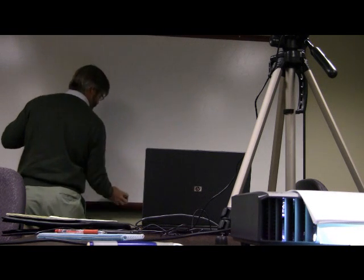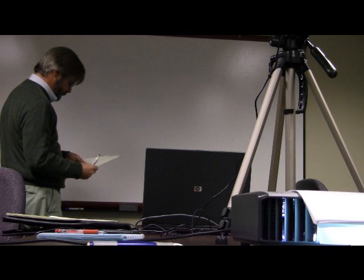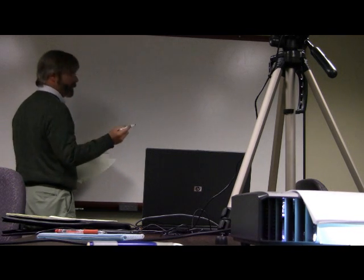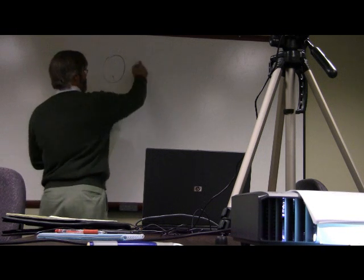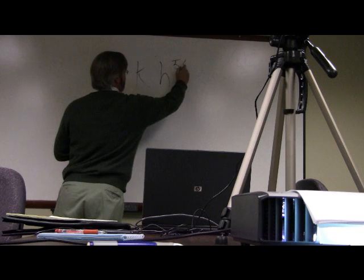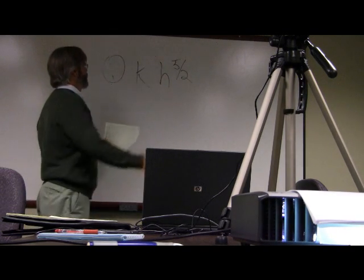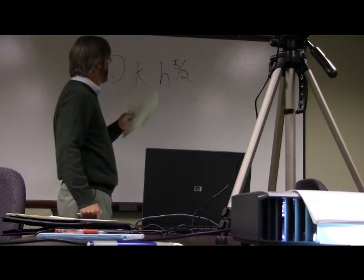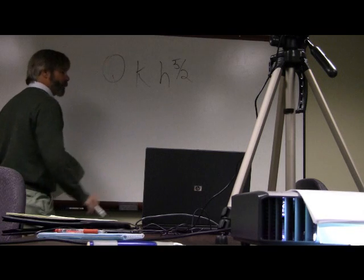A triangular weir, again that is derived the same kind of way. It's equal to a K factor times H to the 5 halves. That's for a triangular weir. You can go in your hydraulic hydrology textbook and get your different values for K.